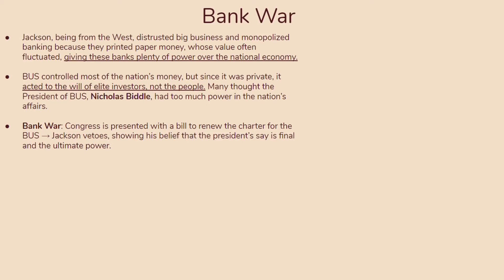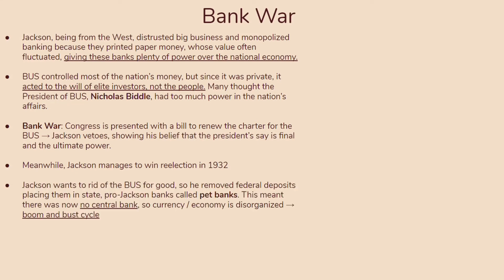Congress was presented with a bill to renew the charter for the Bank of the United States, and Jackson vetoed it, showing his belief that the president's say is final and carries ultimate power — one of his many vetoes throughout his presidency. Jackson won re-election in 1832 and wanted to get rid of the Bank of the United States for good. He removed federal deposits, placing them in local, state, pro-Jackson banks called pet banks, meaning there was no centralized bank and the currency and economy became very disorganized.